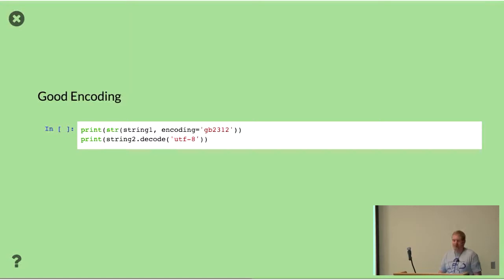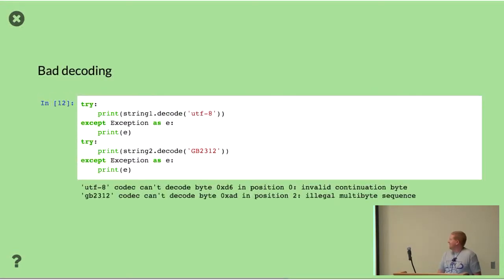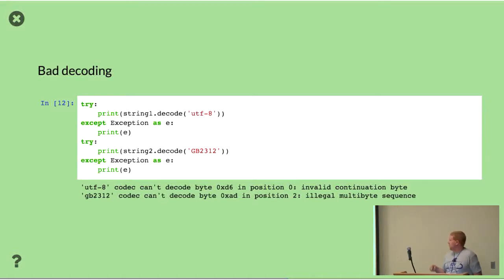So let's try it — if we think we know the encoding, let's try decoding them. Success. It was actually the same string all along — a twist in our mystery. If you try to decode with the wrong encoding you're going to get errors. I just switched the two encodings — tried to decode the first string with UTF-8 and the second string with GB2312 — and I got these exceptions. Anytime you get exceptions like this, it's probably a sign you have the wrong encoding.